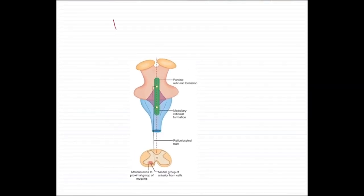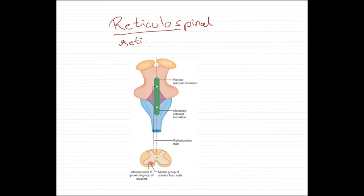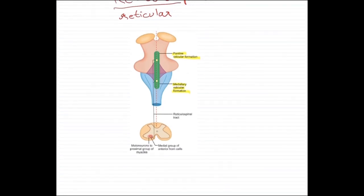The third extrapyramidal tract is the reticulospinal tract. As the name suggests, it originates in the reticular formation — groups of neurons scattered in the pons and the medulla. There are two types: the pontine reticular formation, whose fibers travel in the anterior white column of the spinal cord, and the medullary reticular formation, whose fibers constitute the lateral white column. Both terminate on the medial group of anterior horn cells.